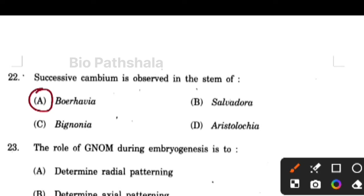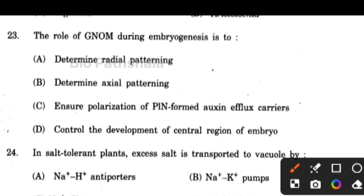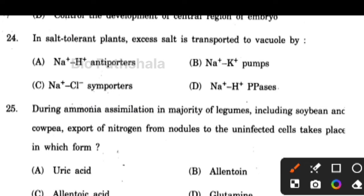Next question: successive cambium is observed in the stem of option number A — that is Boerhaavia. Next question: the role of GNOM during embryogenesis is option number C — to ensure polarization of PIN-formed auxin efflux carriers.